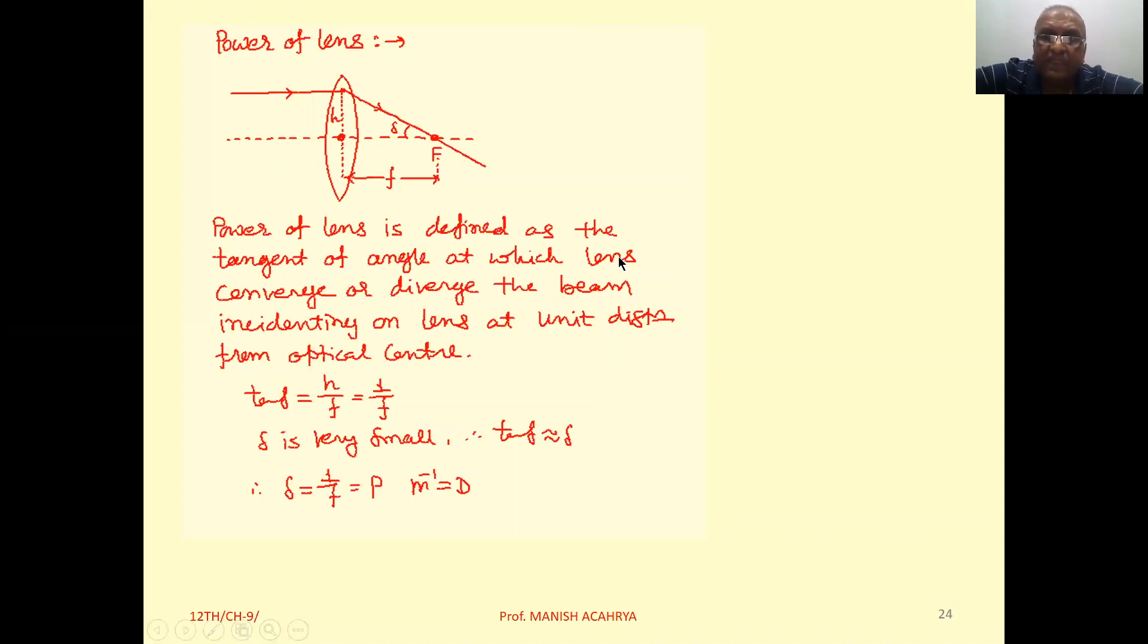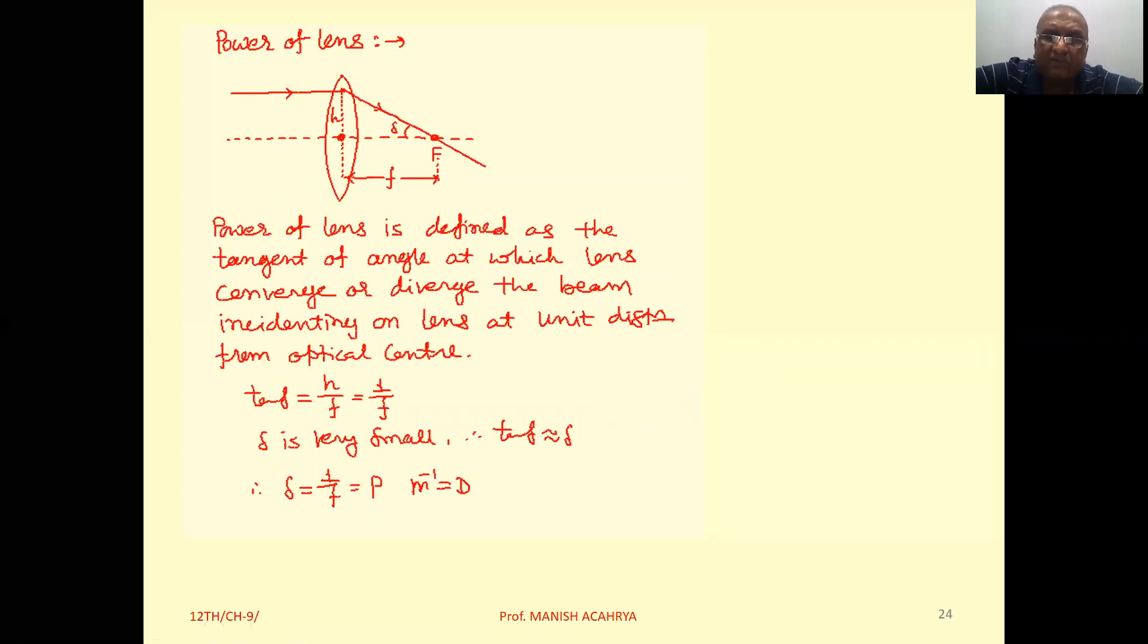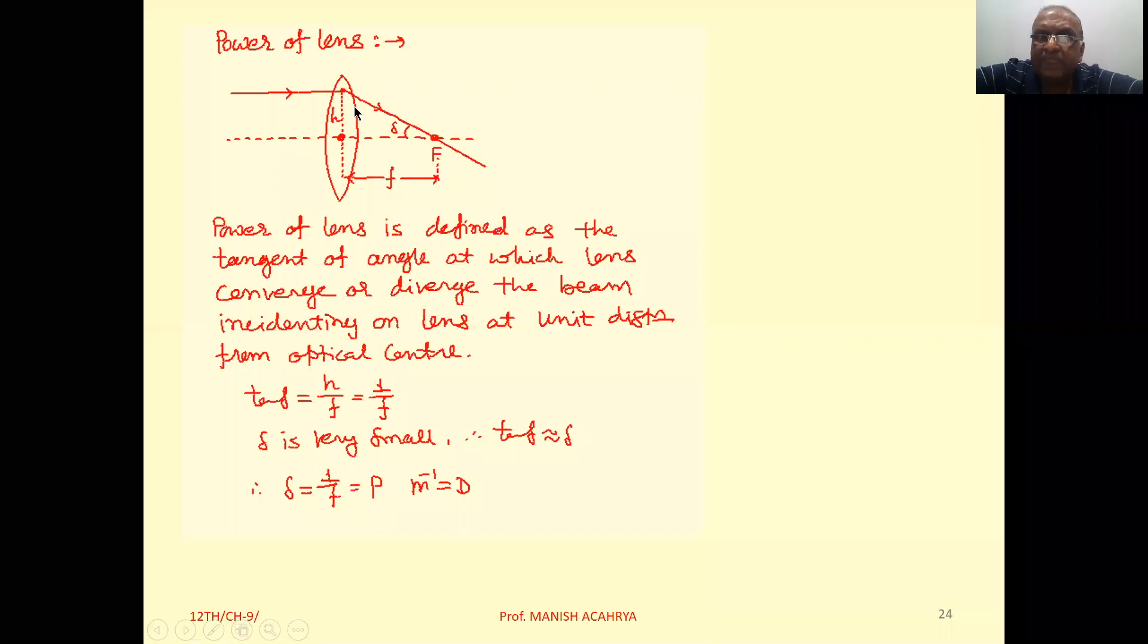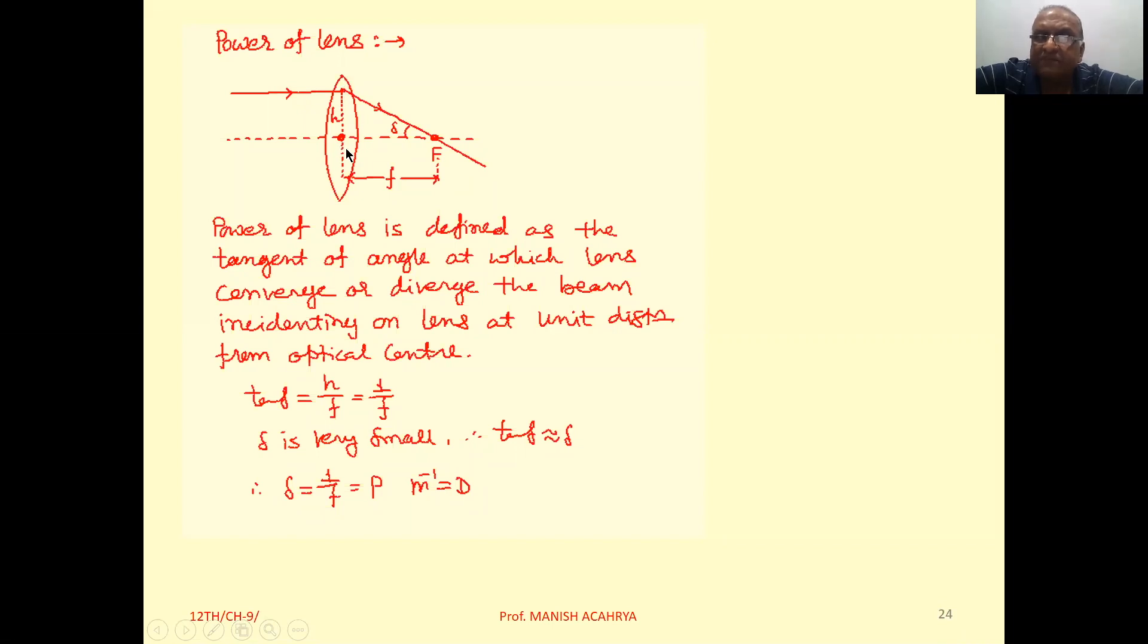Okay, so lens and the power of lens is defined as the tangent of the angle at which lens converge or diverge the beam which one is incidenting on the lens at unit distance from optical center.